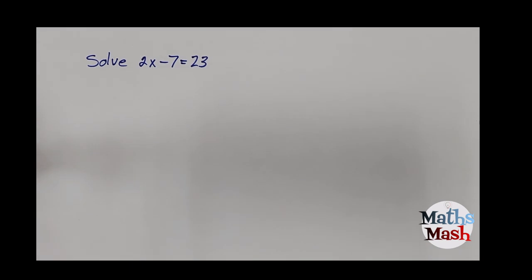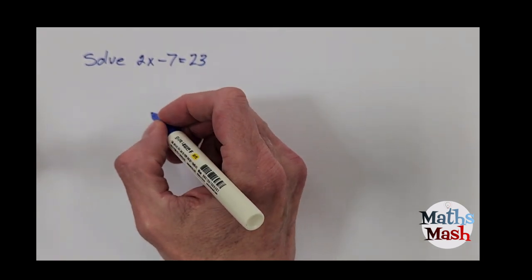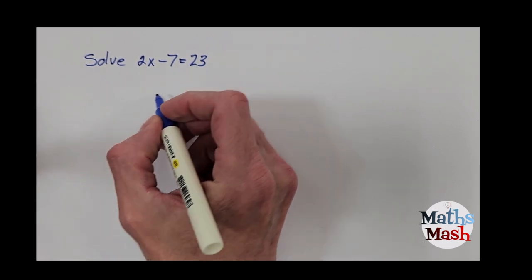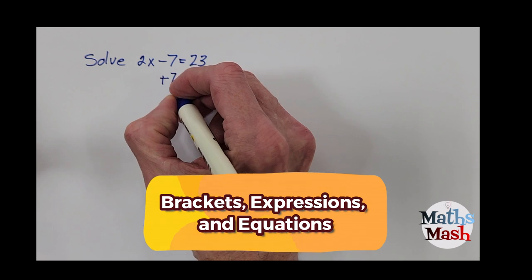Okay, moving on to our next one we've got 2x minus 7 equals 23. All right, well the first thing I'd like to do is get rid of that 7.